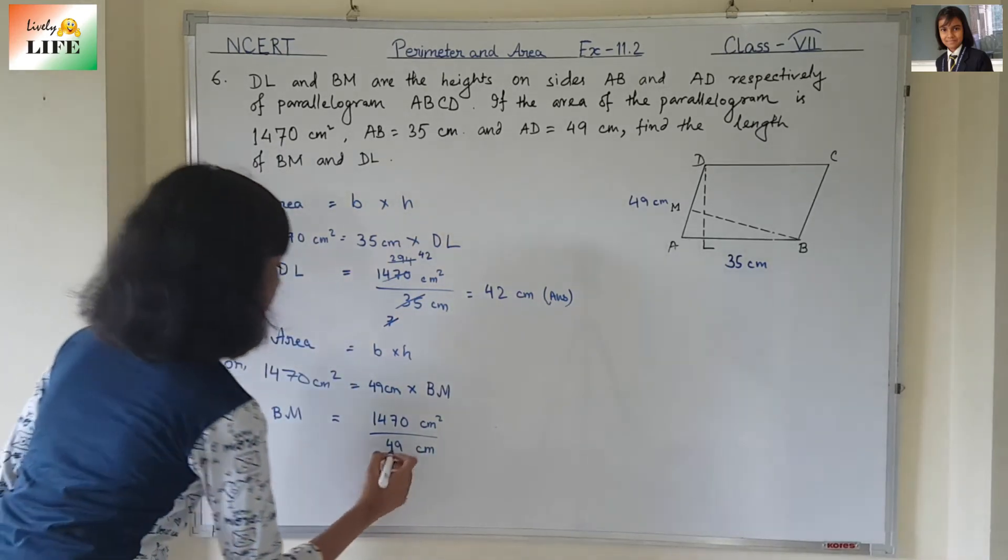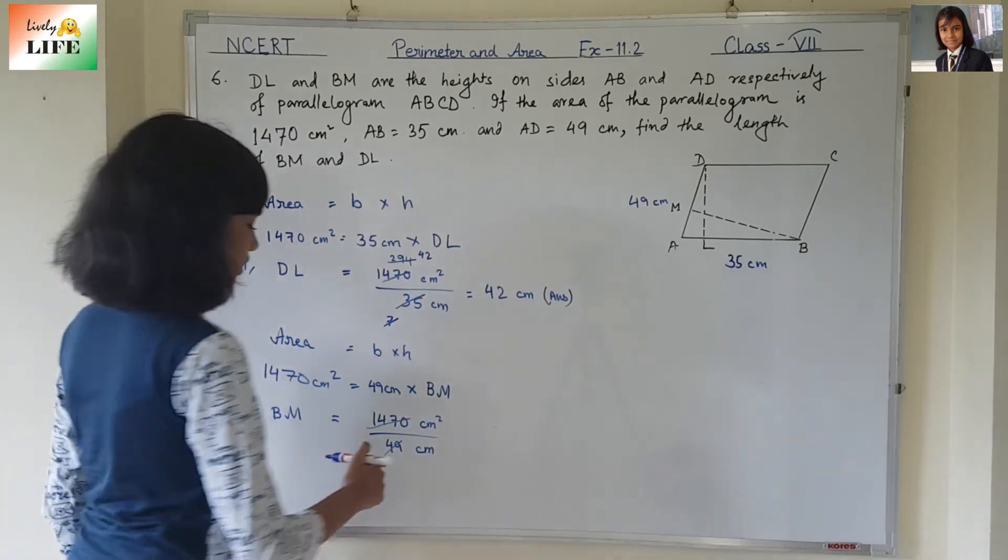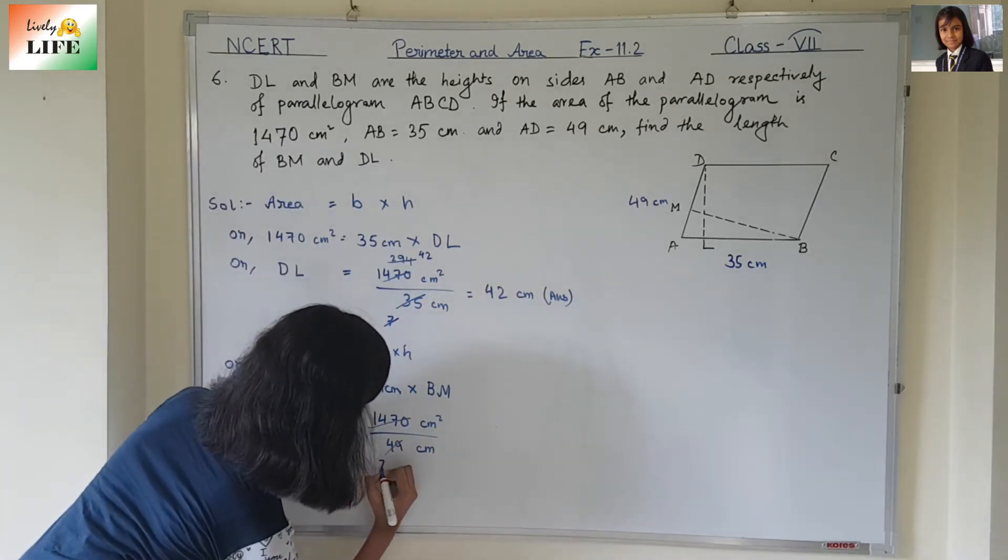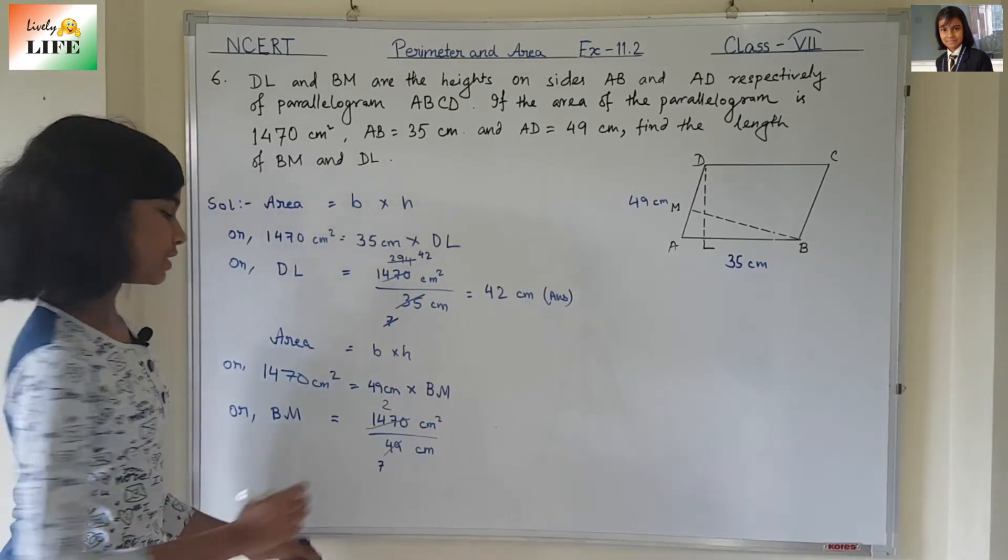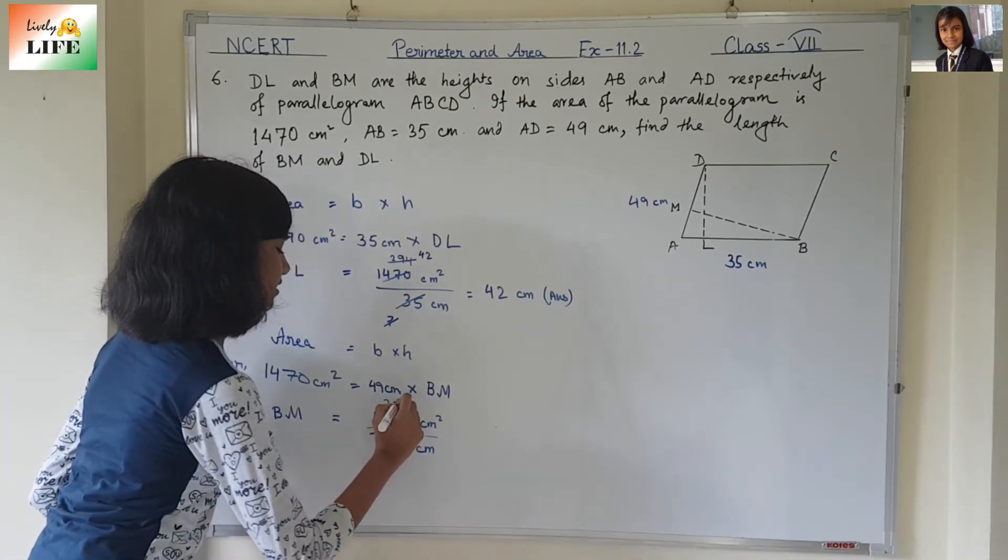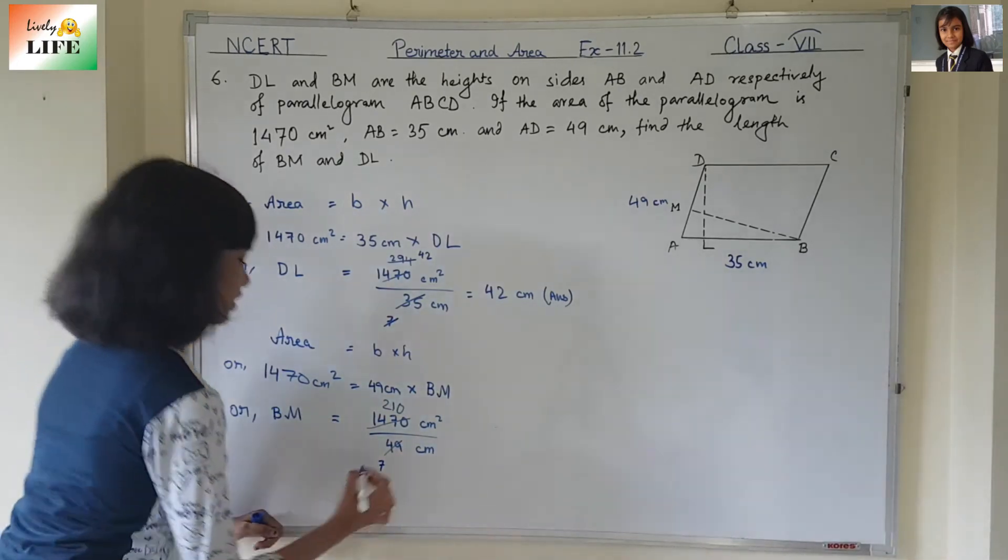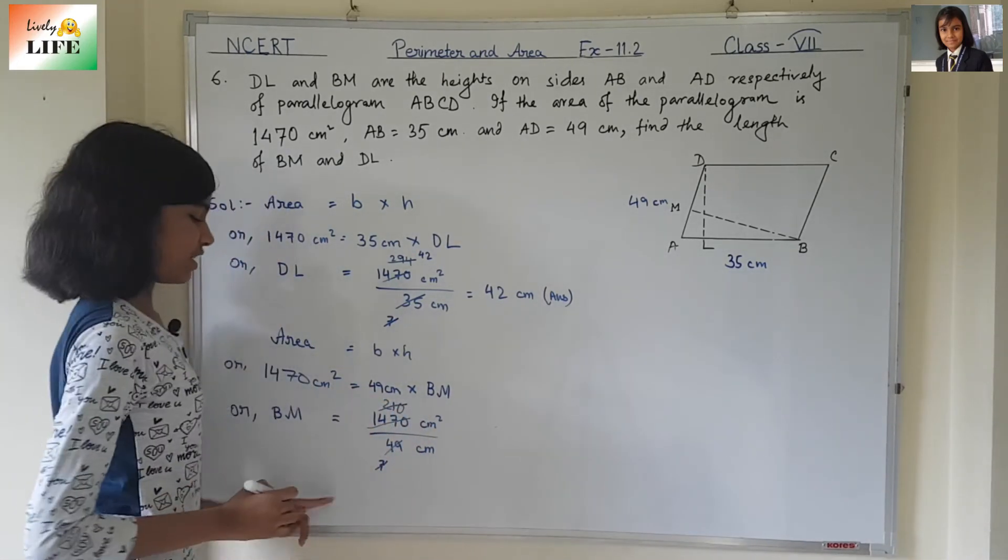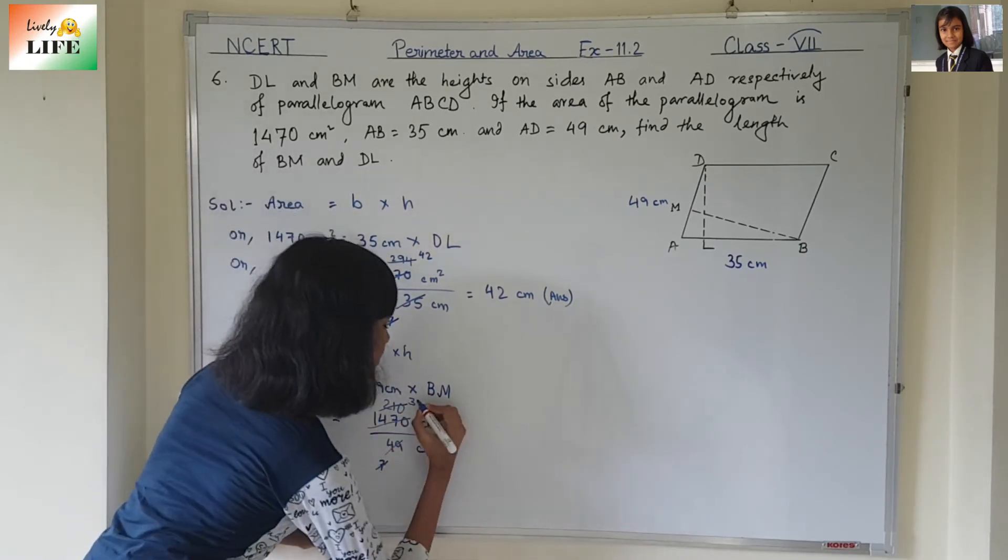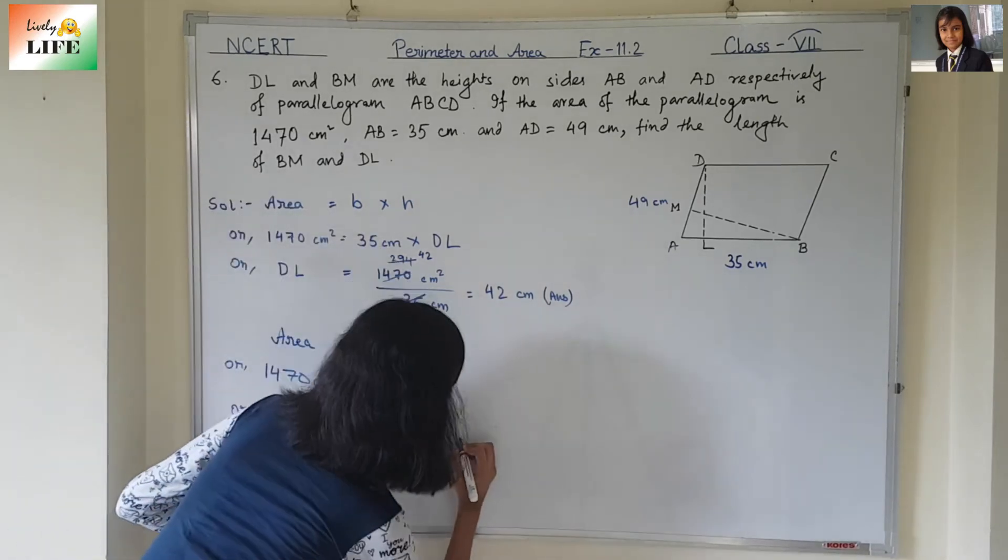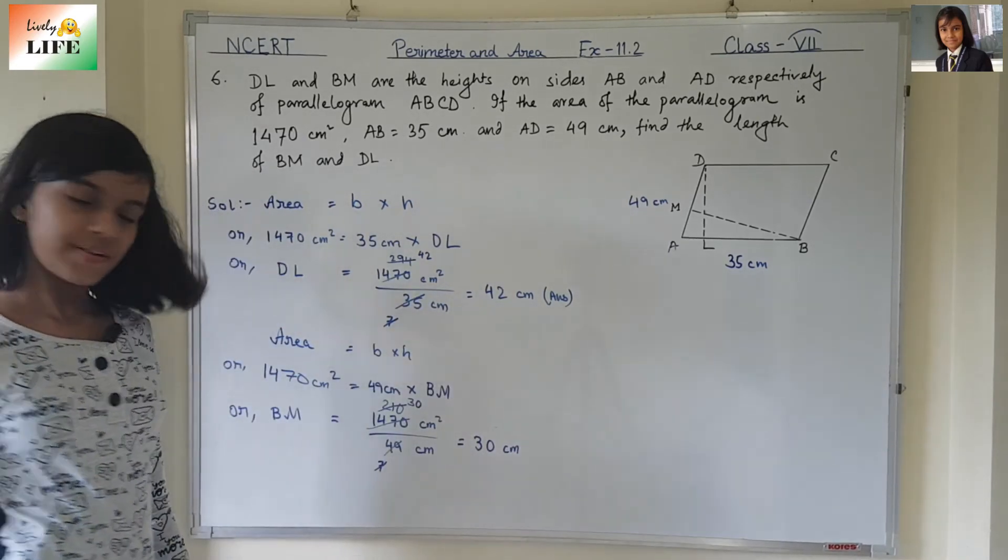Let's divide this by 7. 7 times 7 is 49. Over here, 7 times 2 is 14, 7 times 1 is 7. Now, again, divide by 7. 7 times 3 is 21. So what is the answer? It is 30 cm.